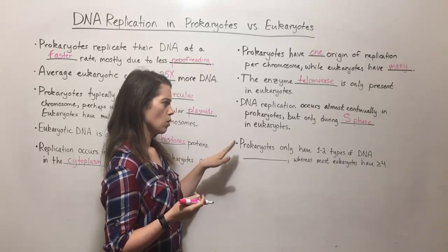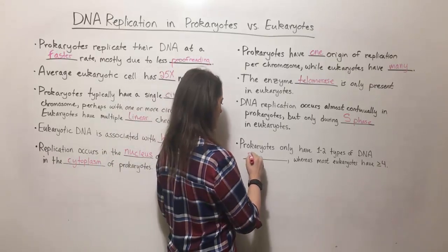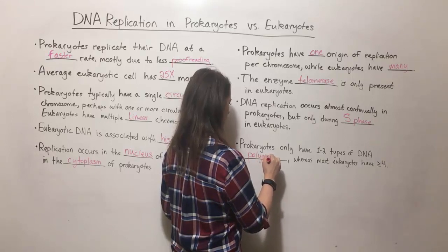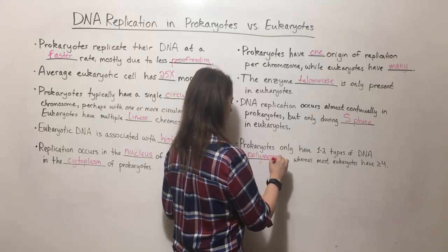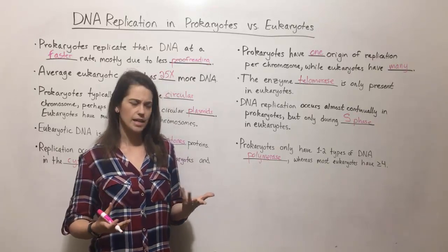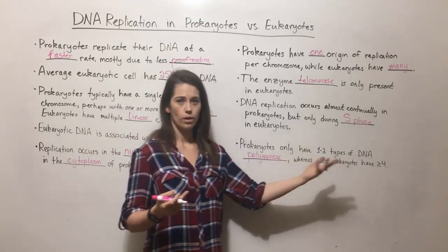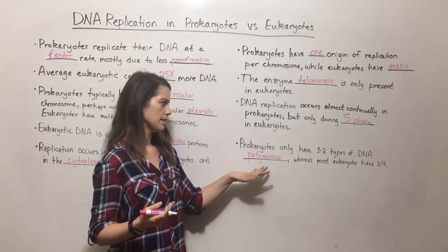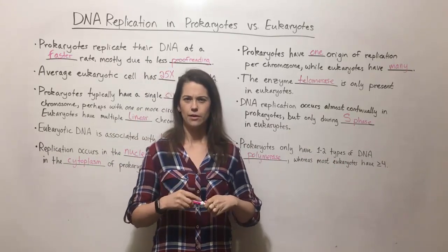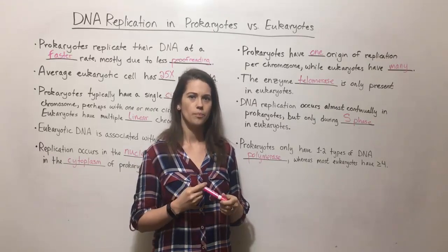Prokaryotes also only have one or maybe two types of DNA polymerase — polymerases being the enzymes that replicate the DNA — whereas most eukaryotes actually have four or more DNA polymerases that carry out slightly different functions and replicate in different places in the eukaryotic genome.